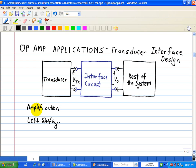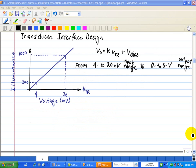Thus, let's express these two functions mathematically, where we have the output voltage coming out of the interface circuit, which serves as an input to the rest of the system, is equal to K times VTR, where K serves as the amplification, plus some V bias, which is our level shifting function. Now, let us consider a specific example shown here of interfacing a transducer.